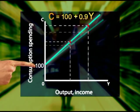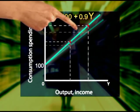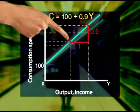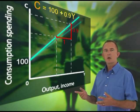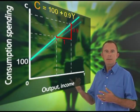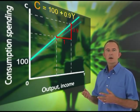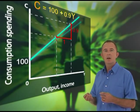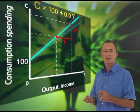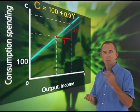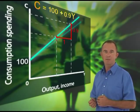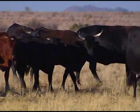The slope of the consumption curve, determined by the increase in the marginal propensity to consume, now changes to reflect this higher percentage. The slope is now steeper, showing that for a given increase in income, consumption spending rises more than it did before.